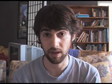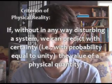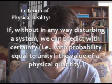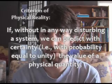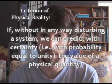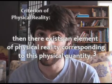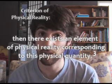What is a complete theory? They say one necessary condition for a complete theory is this: every element of the physical reality must have a counterpart in the physical theory. Another important question to answer is what's physical reality? They say one sufficient condition for something being considered part of physical reality is this — the criterion of physical reality: if without in any way disturbing a system we can predict with certainty, that is with probability equal to unity, the value of a physical quantity, then there exists an element of physical reality corresponding to this physical quantity.